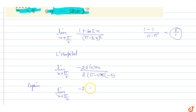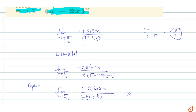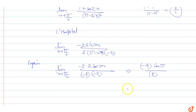Differentiating -2sin2x gives -2 × 2cos2x = -4cos2x. Differentiating -4(π - 2x) gives -4 × (-2) = 8. Now taking the limit as x → π/2: we get -4cos(π) / 8 = -4×(-1) / 8 = 4/8.